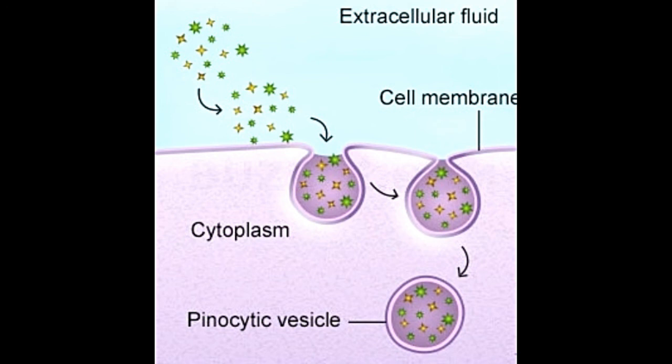Examples — Certain protozoans, such as amoeba, engulf food by the process of phagocytosis. In the immune system of mammals, certain foreign particles like pathogens are internalized by specialized phagocytic cells such as macrophages. Cells take up hormones from their surroundings by pinocytosis. The epithelial cells of the intestines and the human ovum take up nutrients with the help of this mechanism. Root hair cells in plants take up water and solute molecules from the soil by pinocytosis.